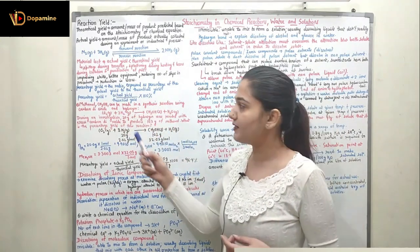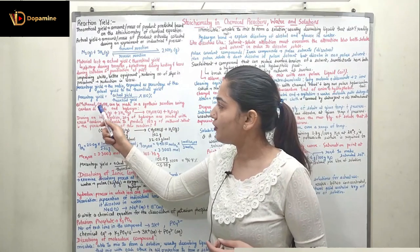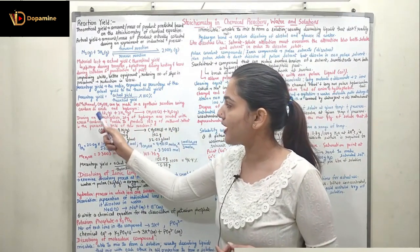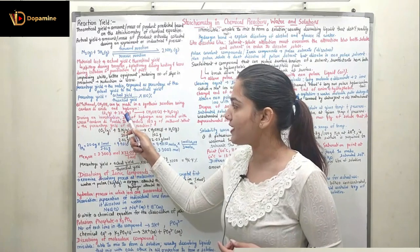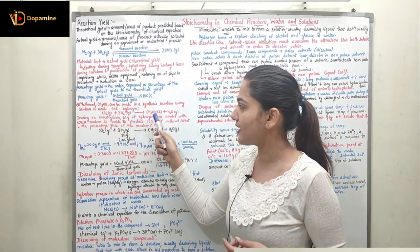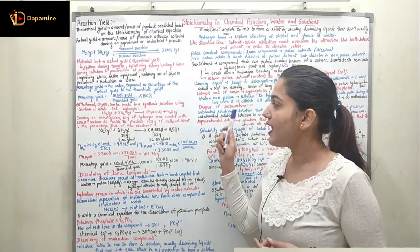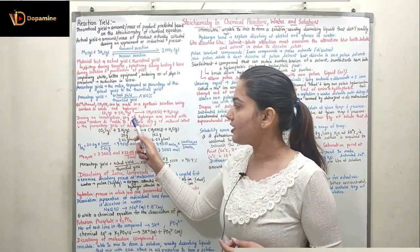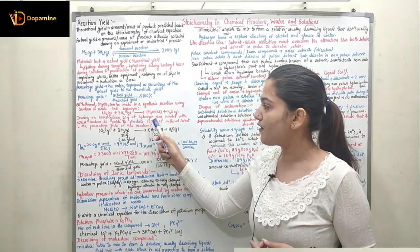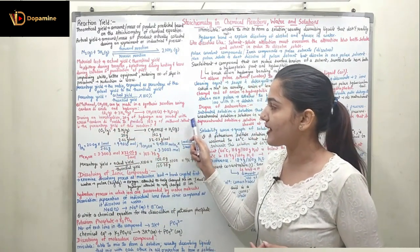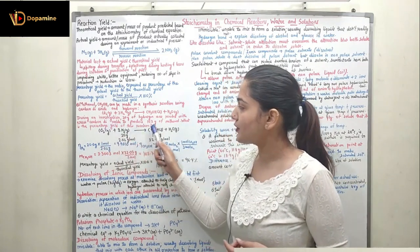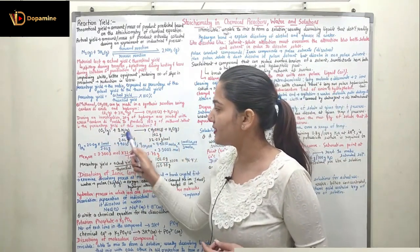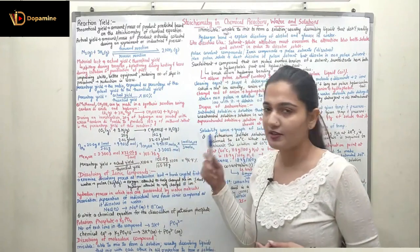Coming to a question: methanol CH3OH can be made in a synthesis reaction using carbon dioxide and hydrogen. The equation is CO2(g) + 3H2(g) → CH3OH(l) + H2O(g). During an investigation, 20 grams of hydrogen was reacted with excess carbon dioxide to produce 102 grams of methanol. What is the percentage yield of this reaction?